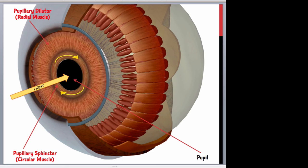This is a clear view of the iris muscles in this 3D eyeball, with light entering through the pupil. The pupillary sphincter, the circular muscle, is responding to the increase in light by constricting itself to decrease the amount of light that enters the pupil.